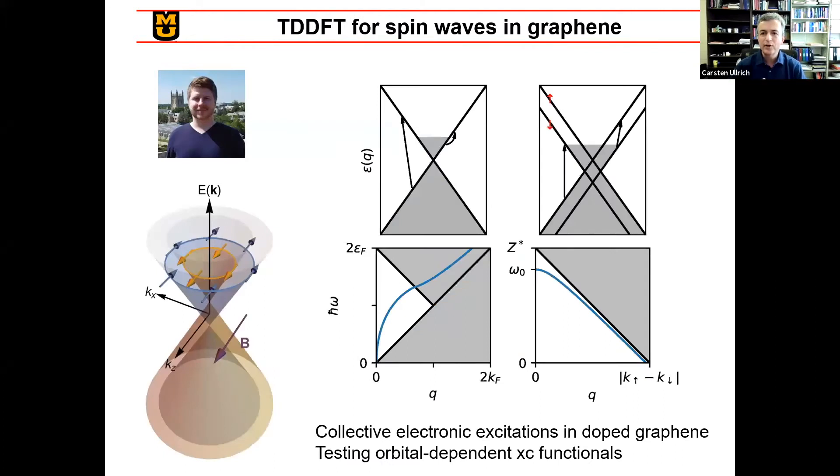Matt is currently finishing up his thesis. He looks at spin waves in graphene. Graphene is, of course, an important system. So we dope it, we split the bands, and we look at collective excitations, such as plasmons and spin waves.